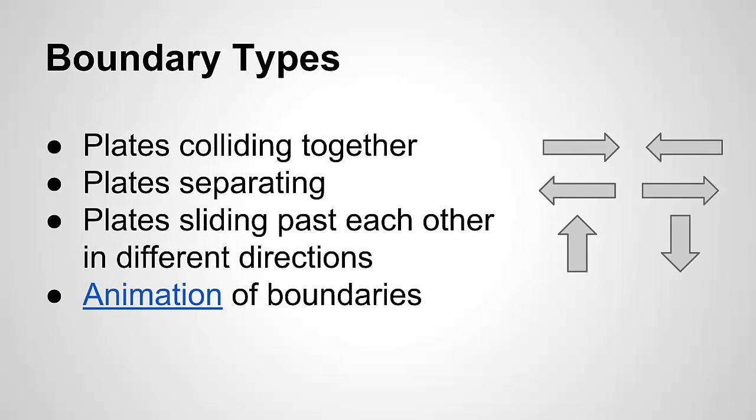Boundary types. Boundaries are where two or more tectonic plates meet. Scientists have classified the plate boundaries into three basic types. Plates are either colliding together, separating, or sliding past each other in different directions.